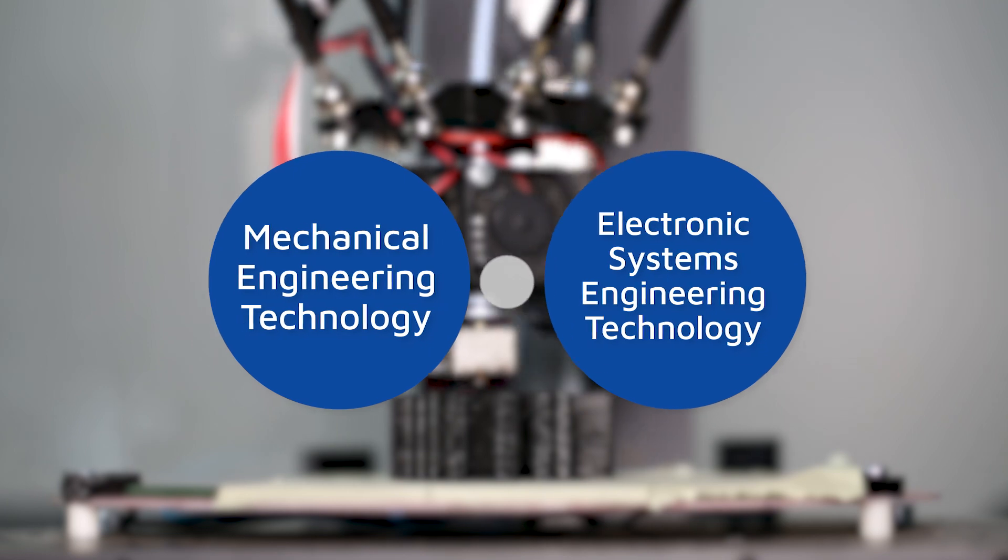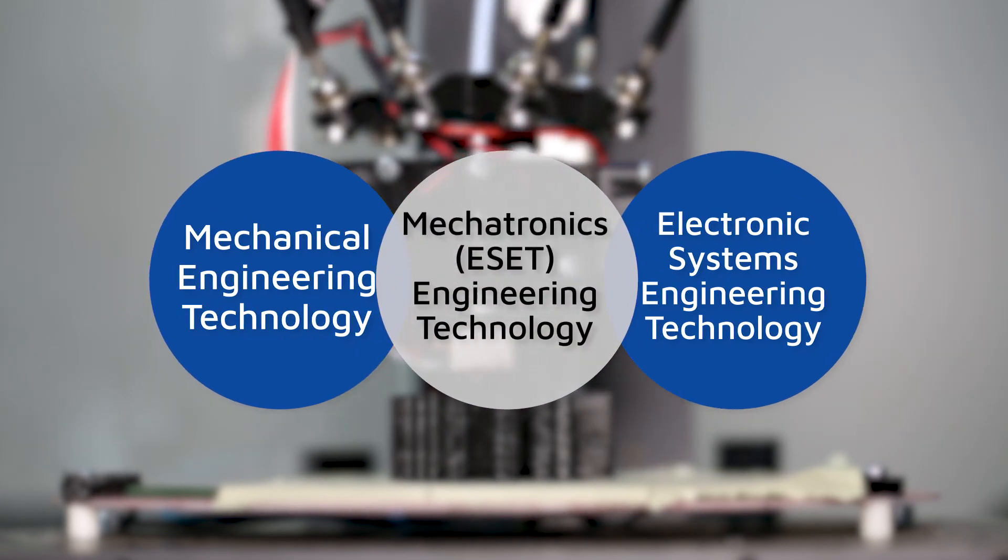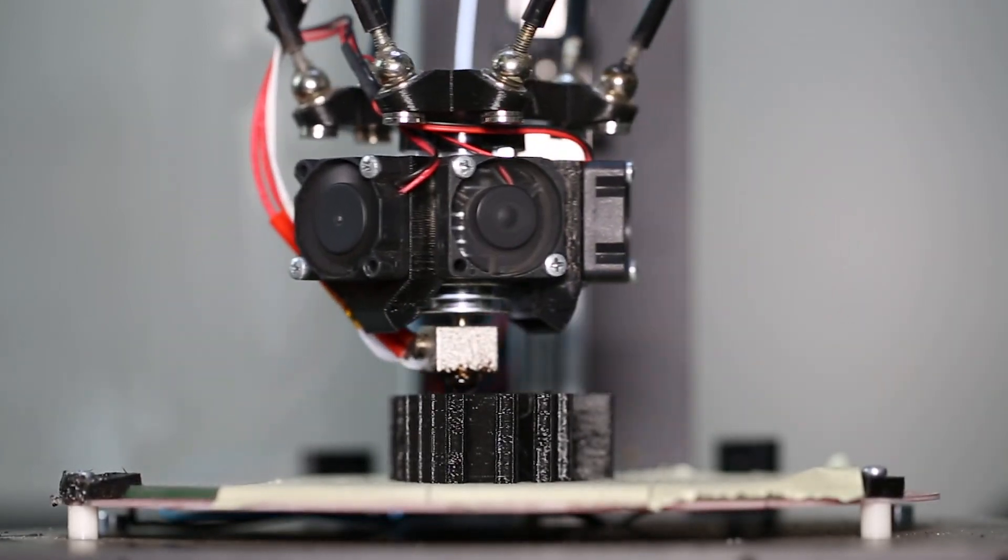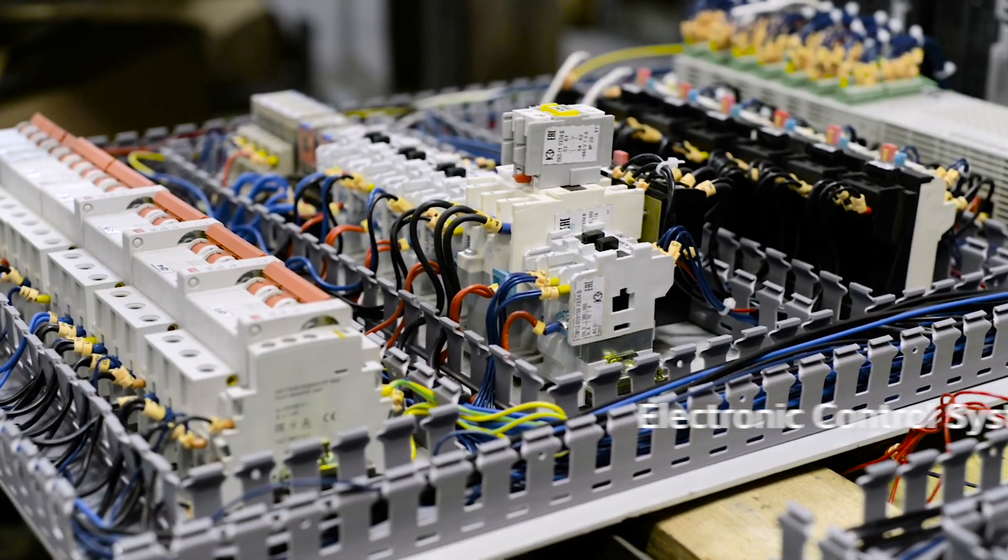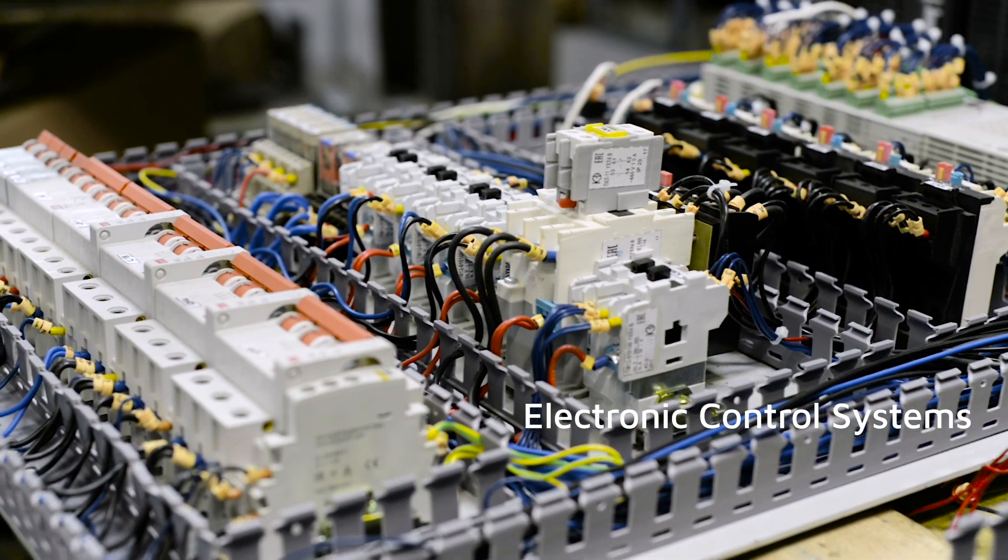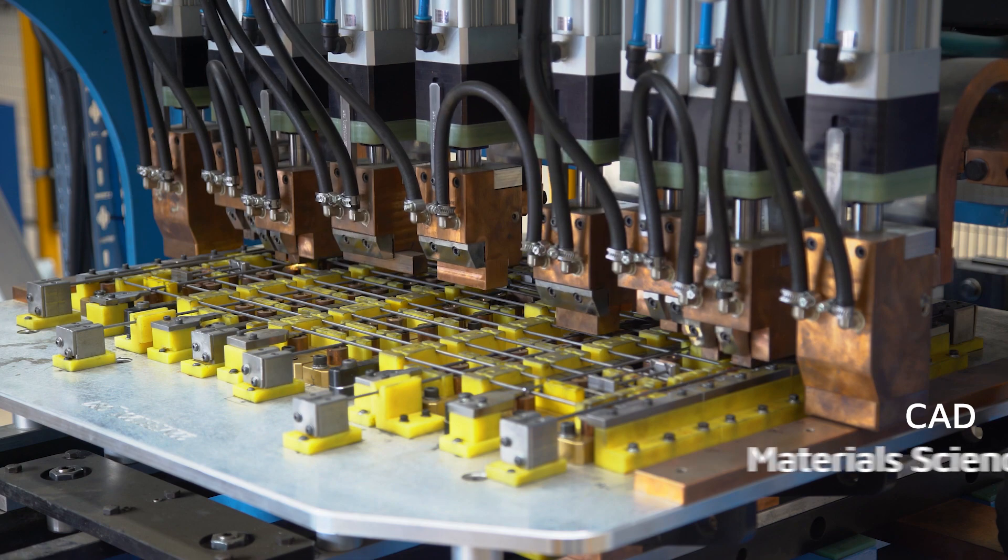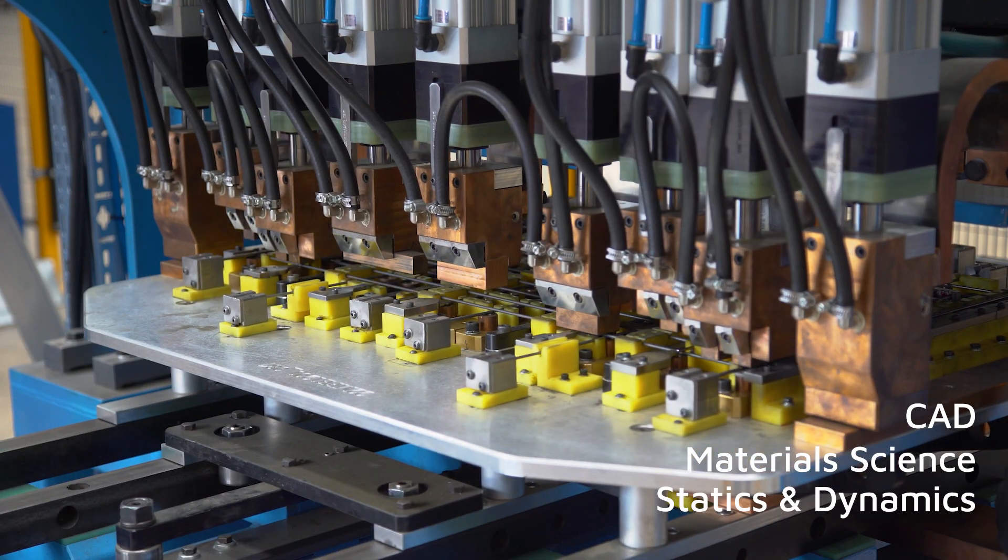But what if you're interested in both MET and ESET? Our Bachelor of Science in Mechatronics ESET marries elements from both the MET and ESET degree programs. In mechatronics, you will learn about electronic control systems from ESET, while also learning the basics of mechanical systems from MET by taking courses in CAD, materials science, statics and dynamics, and more.